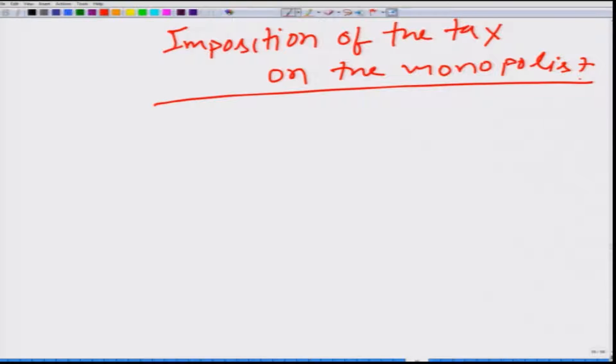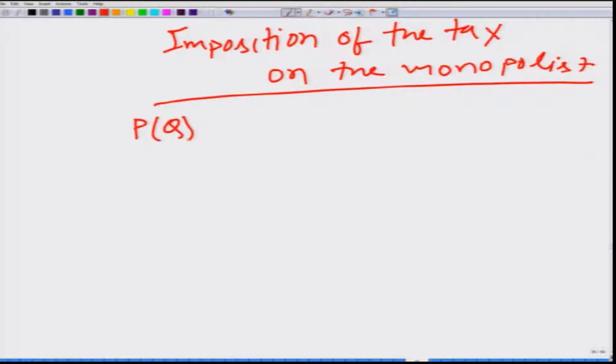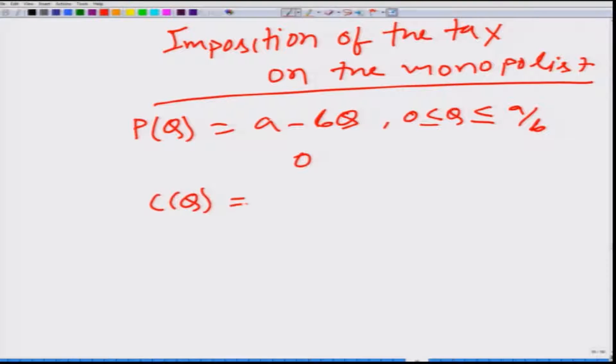We are going to take a very simple example that the demand faced by this monopolist is the linear demand, given by the inverse demand P(Q) = a - bQ. Of course, in this case Q has to be between 0 and a/b, otherwise 0. And let us say that the cost structure is also very simple, it is just C(Q) = cQ where c is a constant. This means that the marginal cost MC = c is fixed at all values of Q.